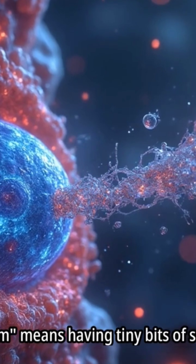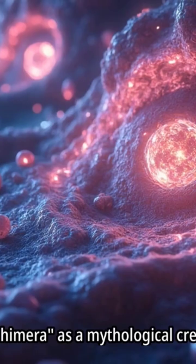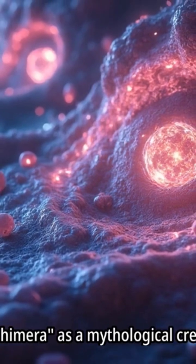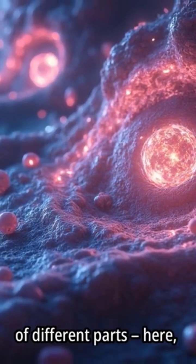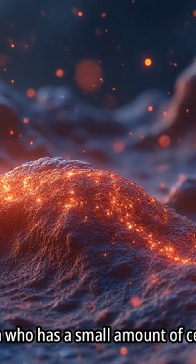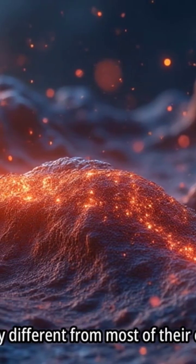Microchimerism means having tiny bits of someone else's cells living in your body. Think of a chimera as a mythological creature made of different parts. Here, it's a person who has a small amount of cells that are genetically different from most of their own cells.